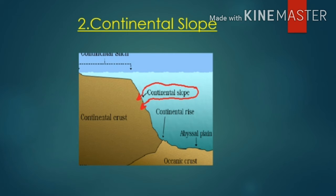The continental slope boundary indicates the edge of the continent. In the picture, after the continental shelf, the red-colored sloping area represents the continental slope, located between the continental shelf and the deep sea plains.